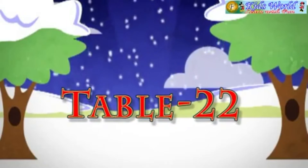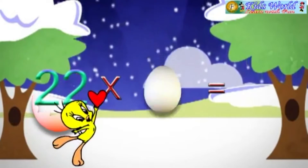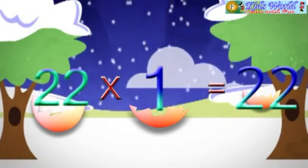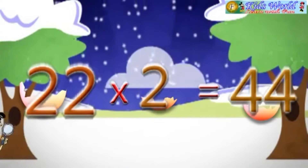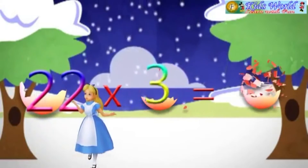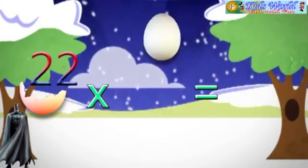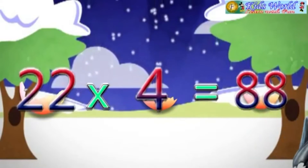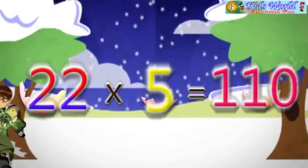Table 22. 22 into 1 is equal to 22. 22 into 2 is equal to 44. 22 into 3 is equal to 66. 22 into 4 is equal to 88. 22 into 5 is equal to 110.